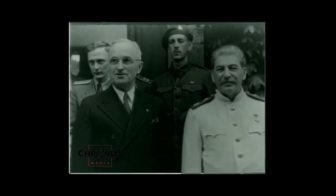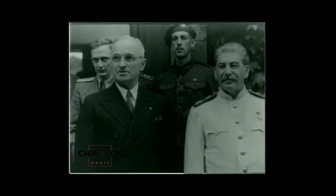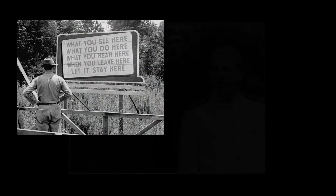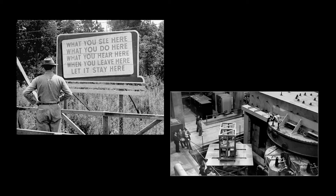Truman had mentioned an unspecified powerful new weapon to Stalin during the conference. Stalin, however, had full knowledge of the atomic bomb's development from Soviet spy networks inside the Manhattan Project. The bombings of Hiroshima and Nagasaki in August of 1945 prompted Stalin to order the development of Soviet nuclear weapons, and on August 29, 1949, the Soviet Union conducted its first nuclear test. The nuclear arms race had begun.